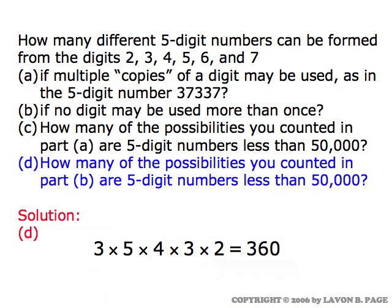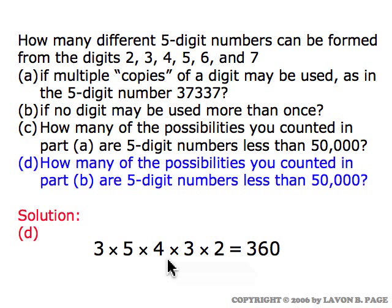In part D, how many of the no-repetition possibilities from part B give us a five-digit number less than fifty thousand? Again we'd have to start with a two, three, or four — three choices. The second digit could be any of the remaining five, then four choices for the third digit, three for the next, two for the next, and one for the final spot. Three times five times four times three times two is three hundred and sixty ways to make a five-digit number satisfying part D's conditions.